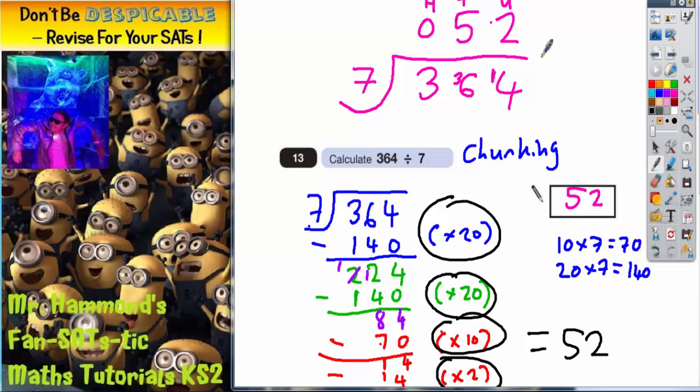This method using the bus shelter is much more quick and efficient, providing that you are dividing by a number less than 10. Chunking will take longer, but it will get you the correct answer. And chunking is an important method to learn because it will help you if you need to do long division divided by numbers more than 10. But 52 is your final answer.